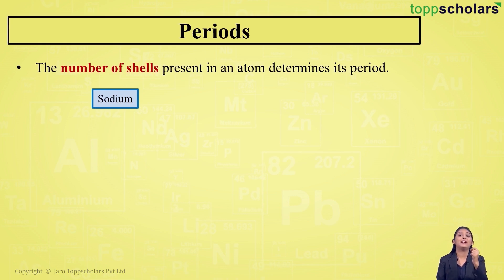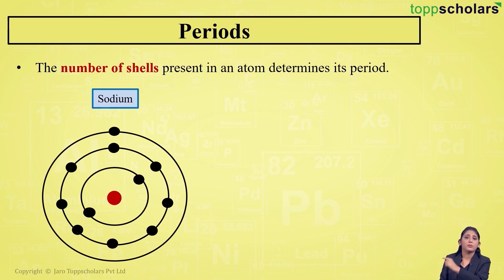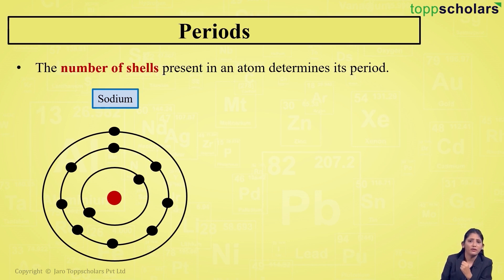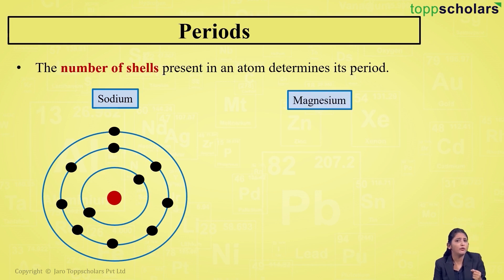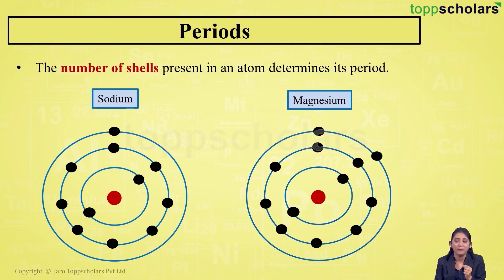Let's take the example of sodium. Its electronic configuration is 2, 8, 1. The red dot represents the nucleus and the black dots represent the electrons. Sodium has two electrons in the first orbit, eight in the second, and one in the outermost orbit — so sodium has three shells. Magnesium has the electronic configuration 2, 8, 2, so it also has three shells.